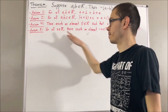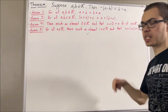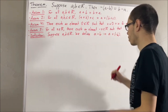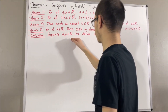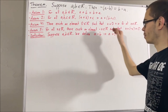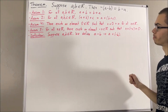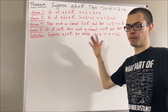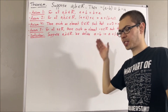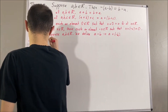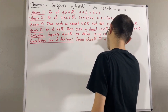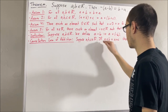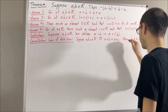Using axiom 5, our definition of subtraction is as follows. Suppose a and b are real numbers. We define a minus b to be a plus the negative of b. We're also going to be using a fact which we have proven: the cancellation law of addition. Suppose a, b, and c are real numbers. If a plus b is equal to a plus c, then b is equal to c.